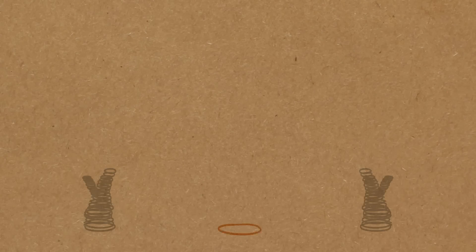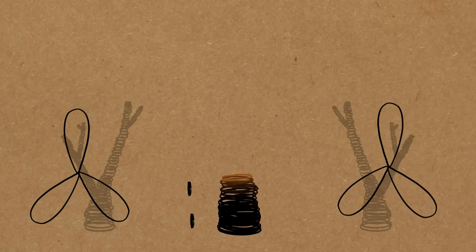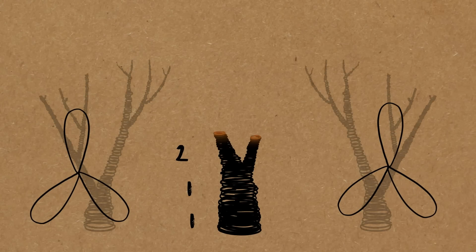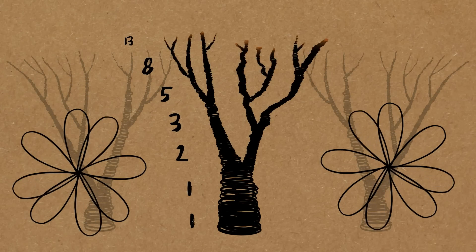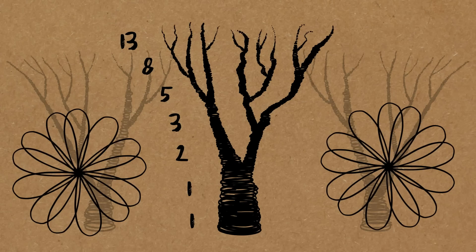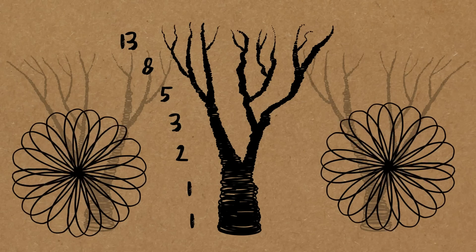They appear all over nature. Cut an apple open, a five-pointed star — a Fibonacci number. The number of petals on a flower. And Fibonacci made them famous by writing about their occurrence in nature.